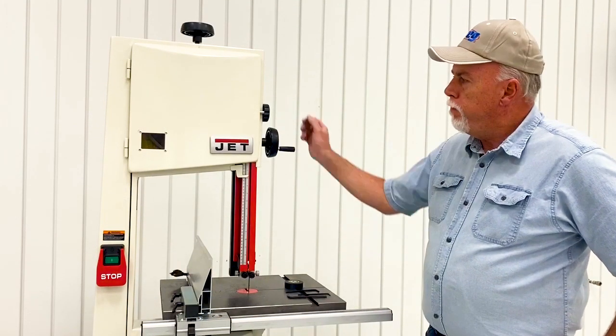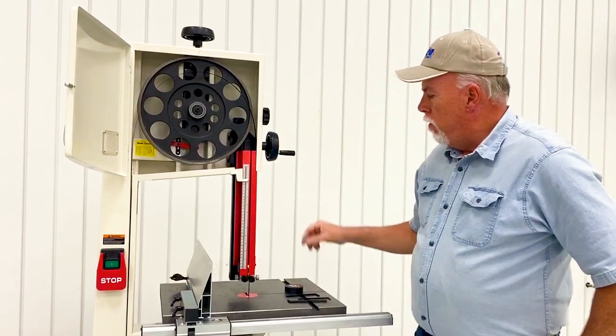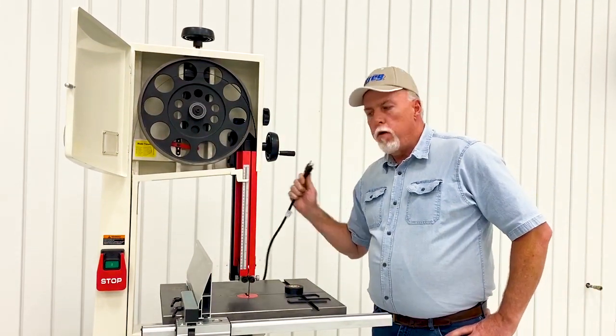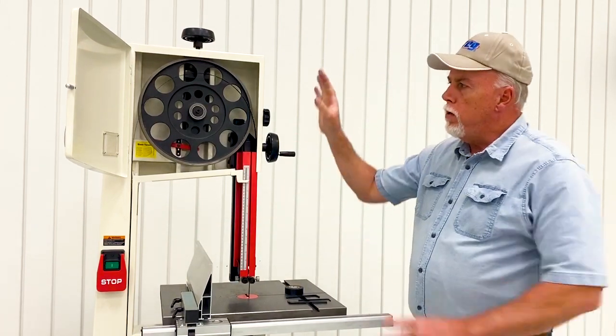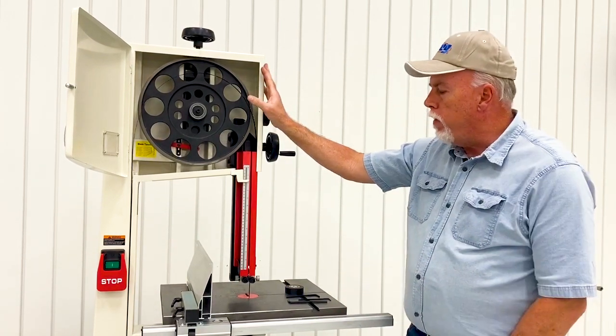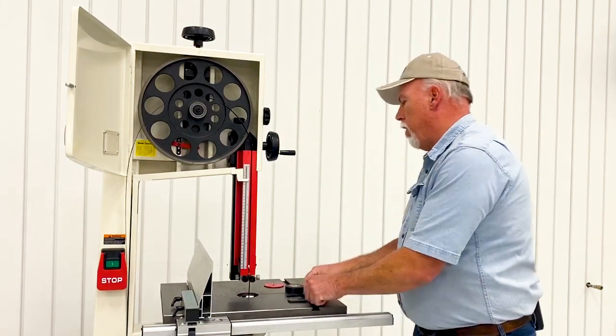Blade tracking problems. Your blade came off. First thing you need to do is unplug the power. Next thing everybody wants to do is put the blade on. You're not quite ready for that yet. Go ahead and remove your throat plate. Get it out of the way.